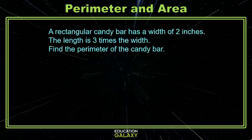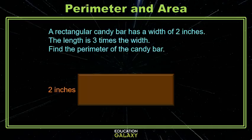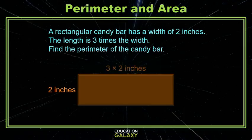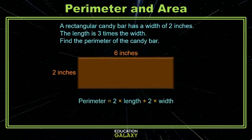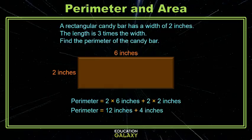Let's look at an example for perimeter. We have a rectangular candy bar with a width of two inches, and its length is three times the width. We substitute two inches in for width, so the length is six inches. For perimeter, we use two times length plus two times width: two times six plus two times two gives us 12 inches plus four inches, for a perimeter of 16 inches.